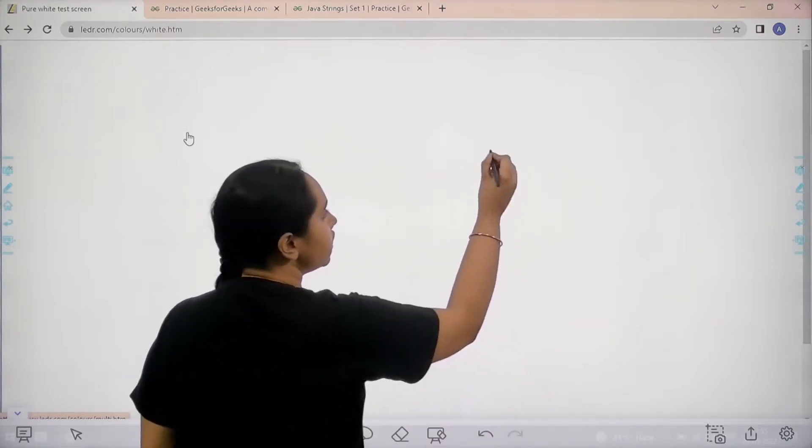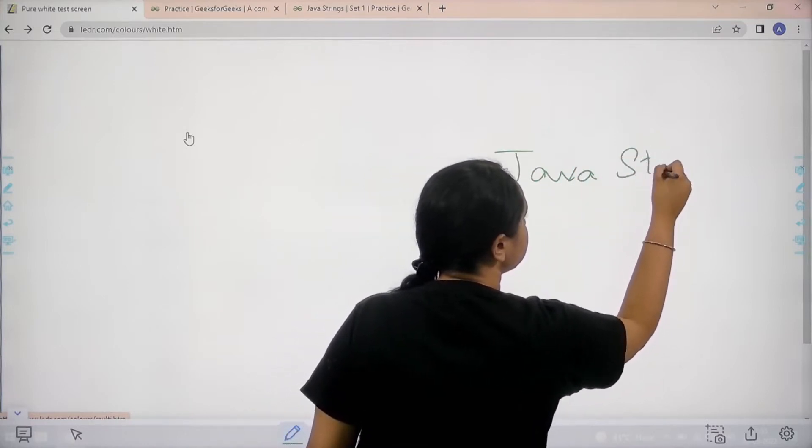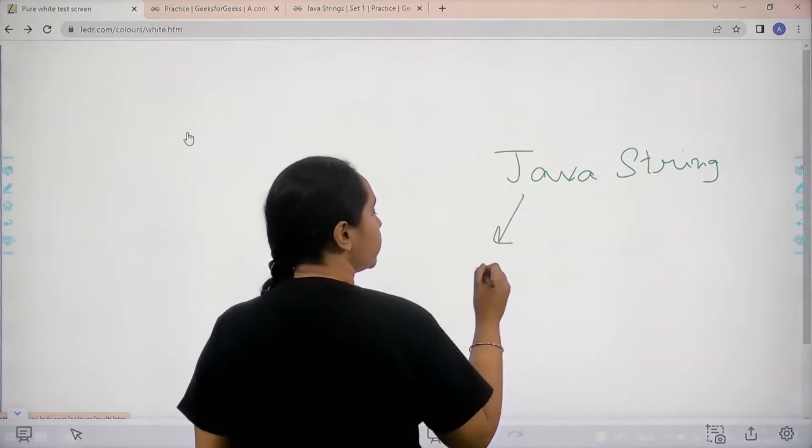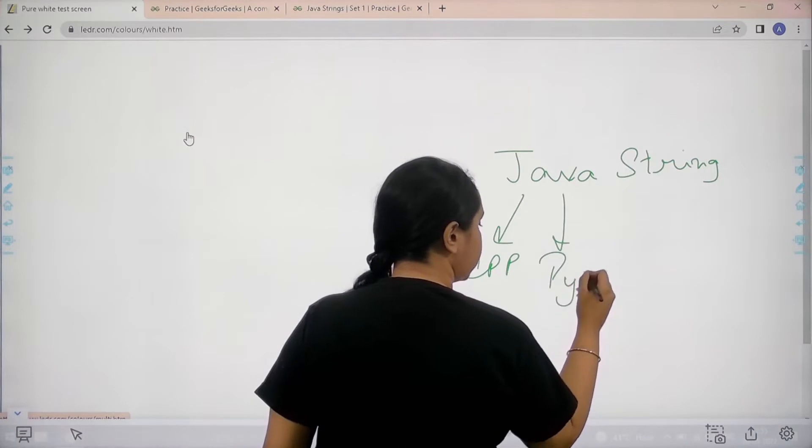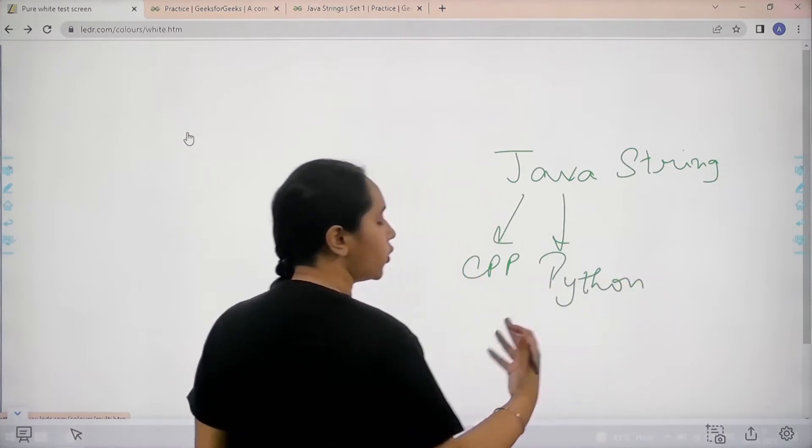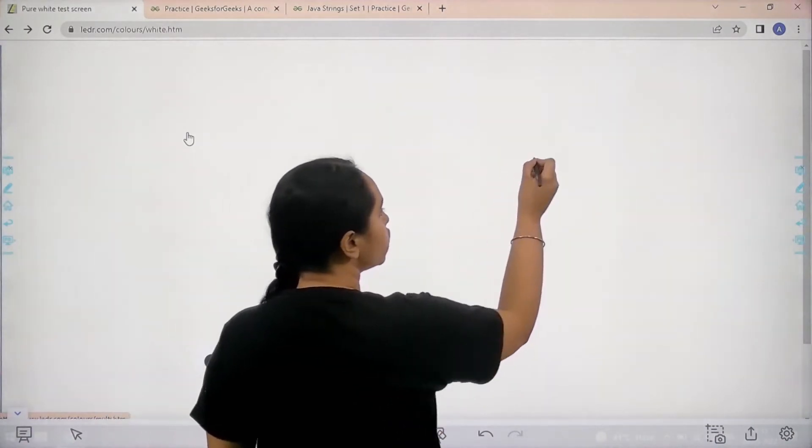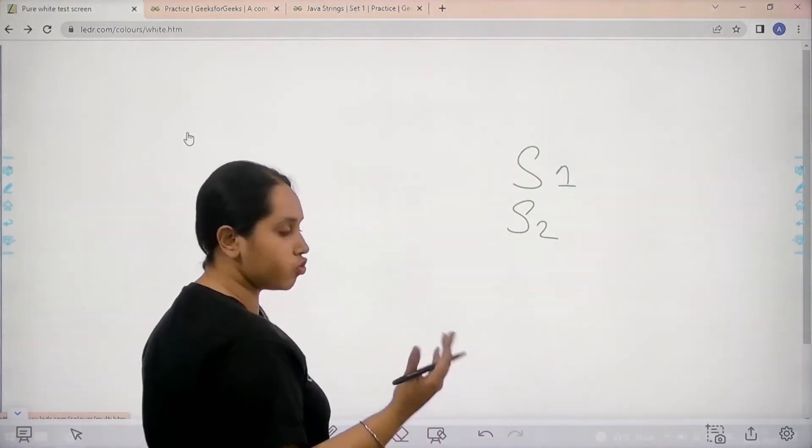So basically in this question java string, it is not necessary to solve this question in java, you can do it in cpp, java itself or python. So it is your choice which coding language you need to use. In this question we are given two strings, s1 and s2.